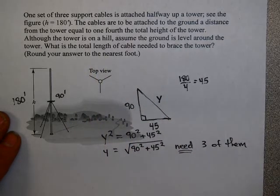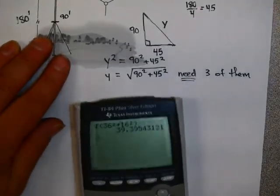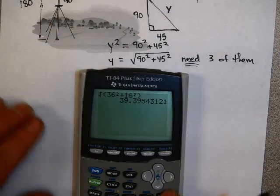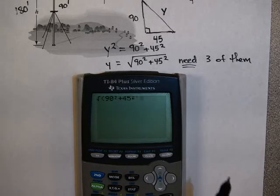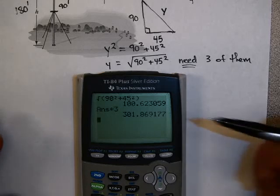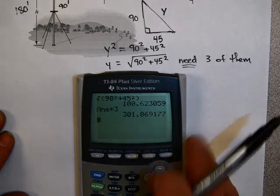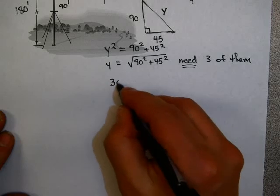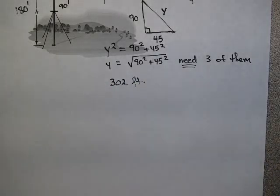So I'm going to take this answer, multiply by three, and then round to the nearest foot. I need my calculator. I can't do that one in my head. So let's bring my calculator out here. I'll clear this out. And I'm going to take square root of 90 squared plus 45 squared. There it is. I'm going to multiply that by three because I need three cables bracing this tower. And now I'm going to round to the nearest foot. Rounding that to the nearest foot, I get 302. And 302 feet should be my answer. I hope you have found this video useful.